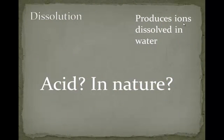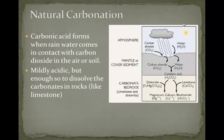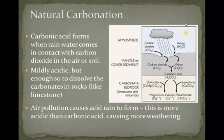But acid — in nature? You might think acids only happen in labs. There is a natural carbonation that happens when rainwater comes in contact with carbon dioxide in the air or the soil. This forms a mildly acidic carbonic acid. Air pollution also causes acid rain to form, which is more acidic than carbonic acid and causes more weathering on rocks.